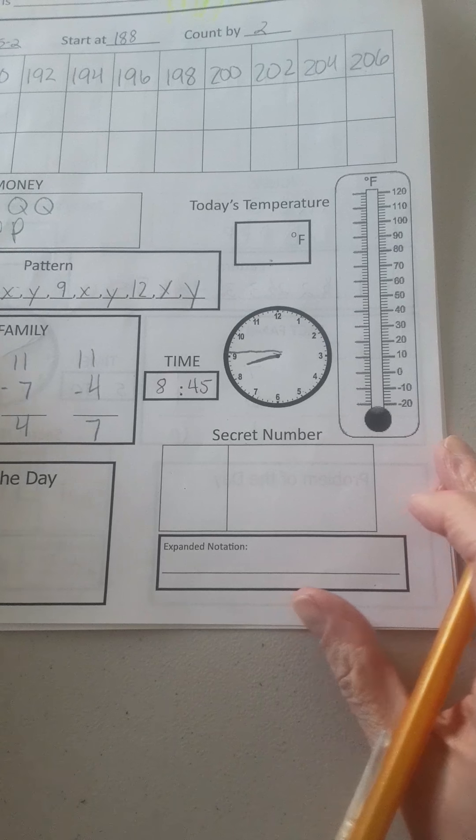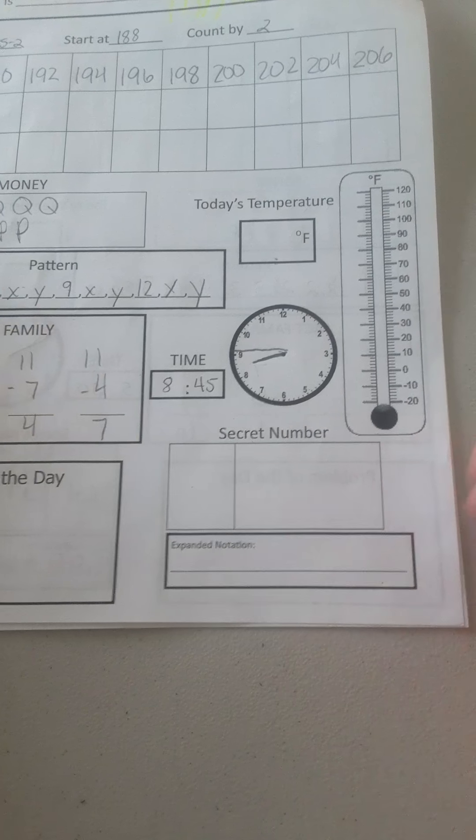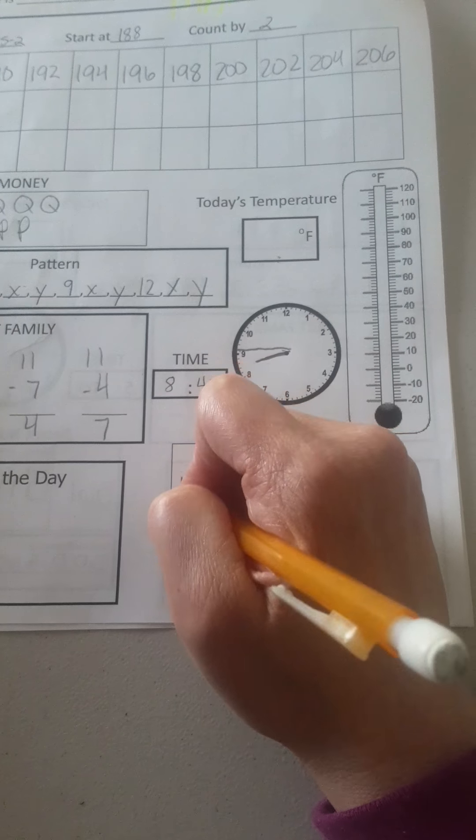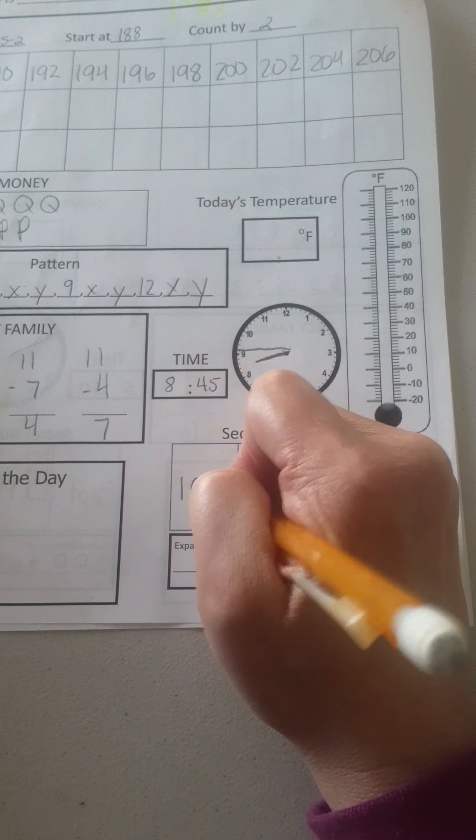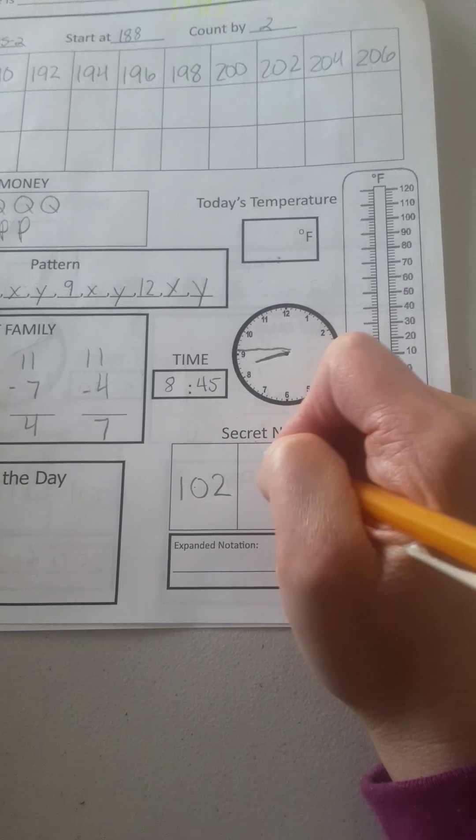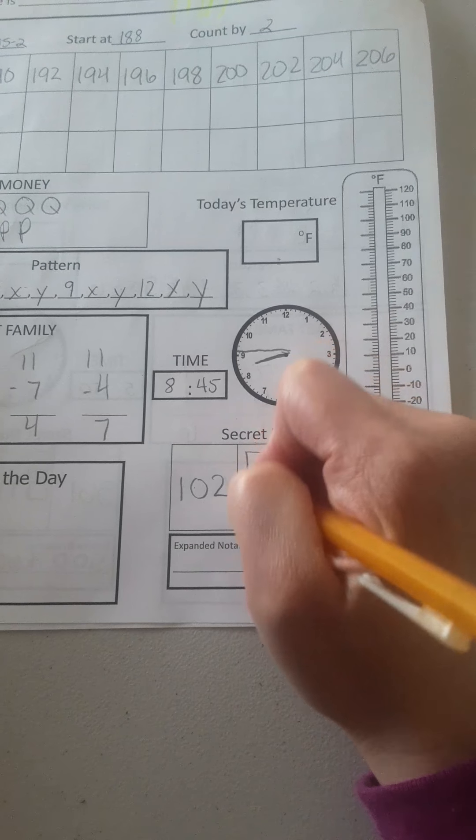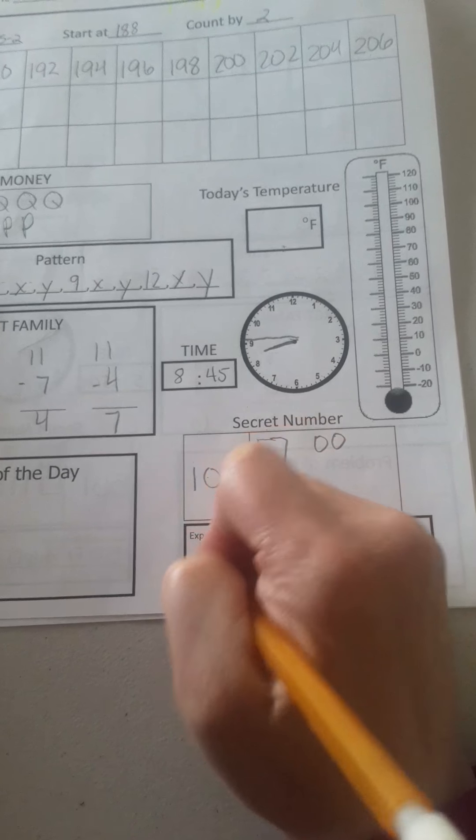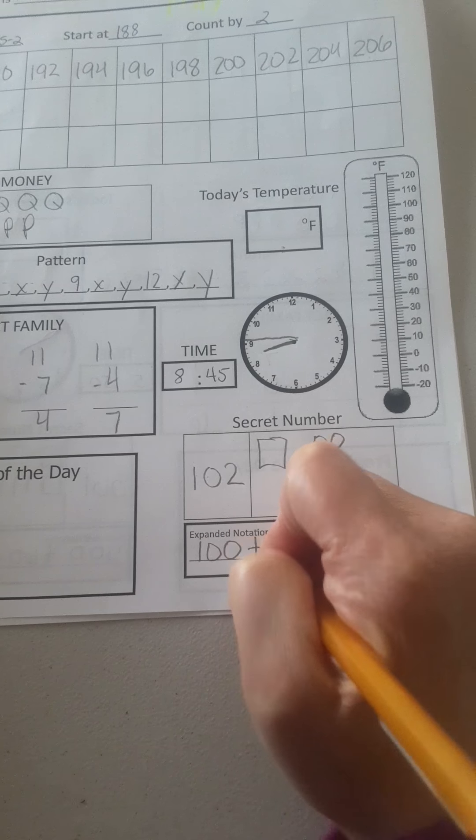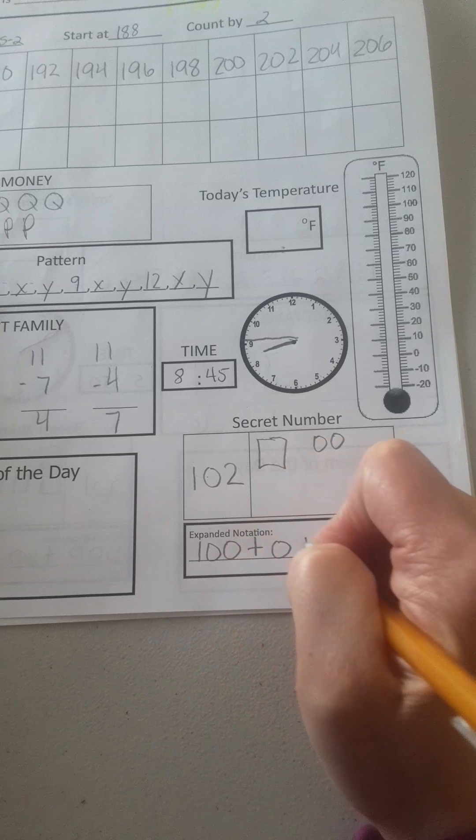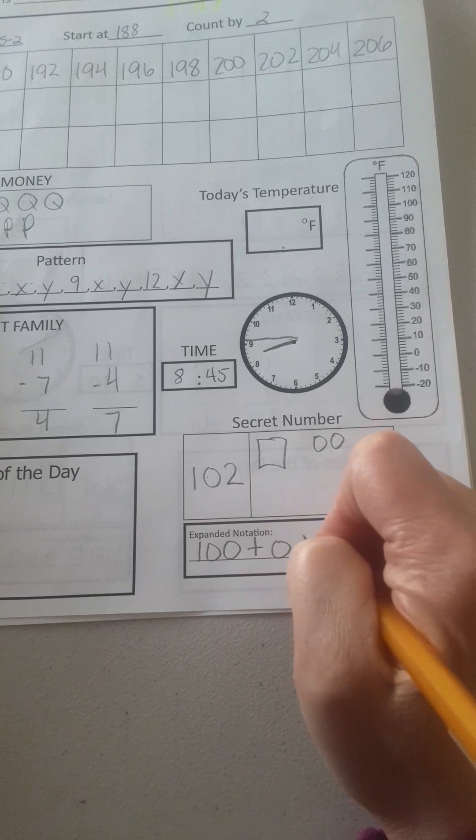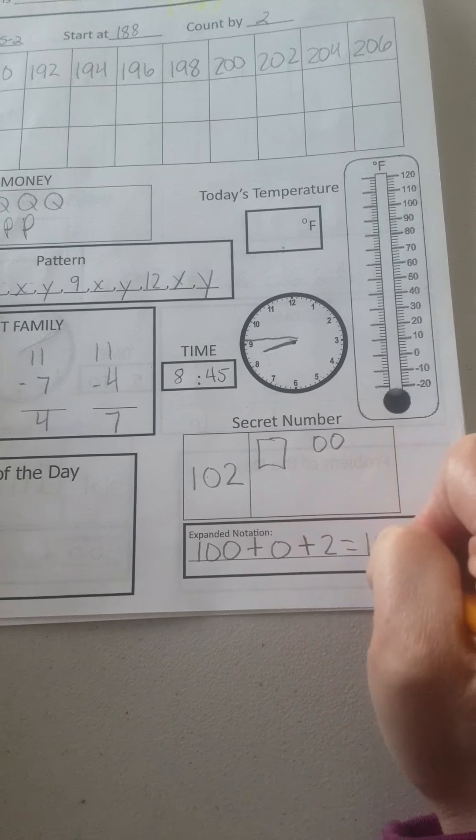Oops, there's no secret number of the day. So I'm going to give you 102. One hundred. Two ones. Expanded form. 100 plus 0, because there is no 10s, I have to show that. Plus 2 equals 102.